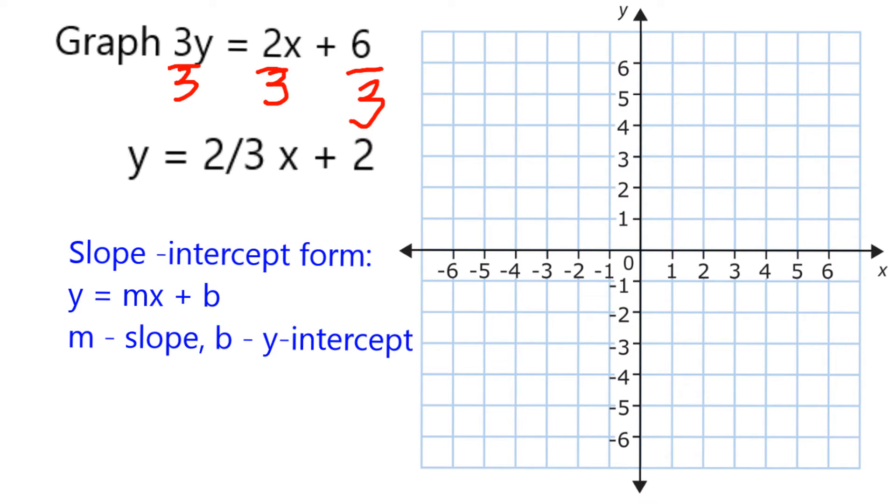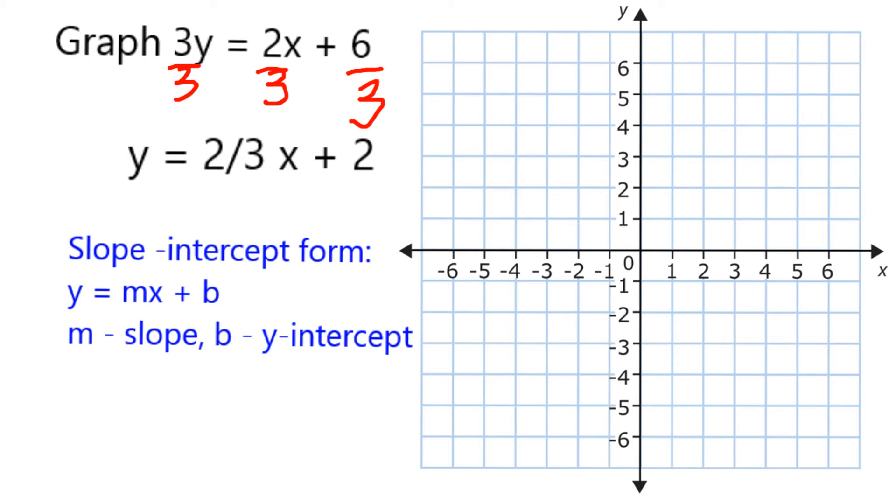As you may recall, the slope-intercept form is y equals mx plus b, and what is written as b, in this case 2, represents the y-intercept.